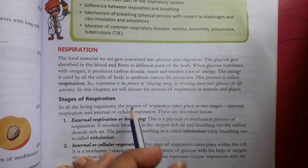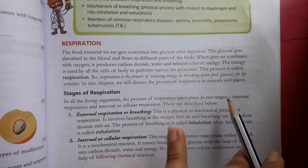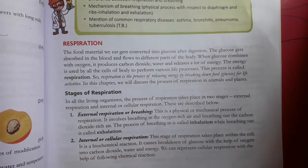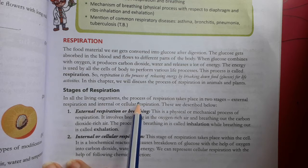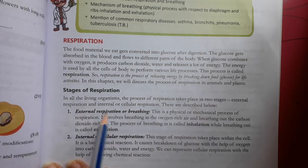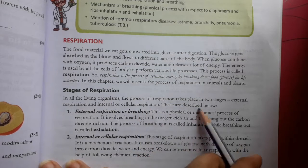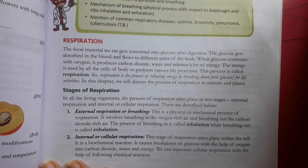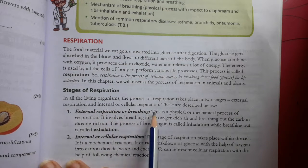In this chapter, we will discuss the process of respiration in animals and plants, and the stages of respiration. In all living organisms, the process of respiration takes place in two stages: one is external respiration and another is internal, or cellular, respiration.